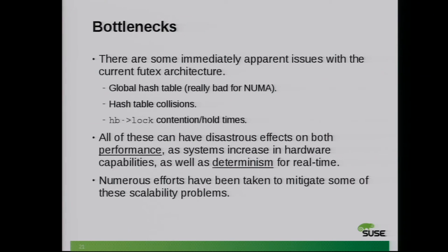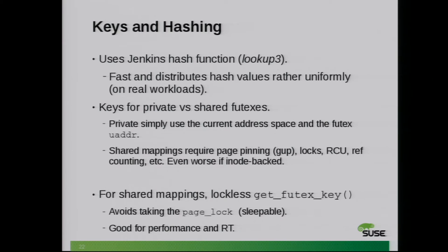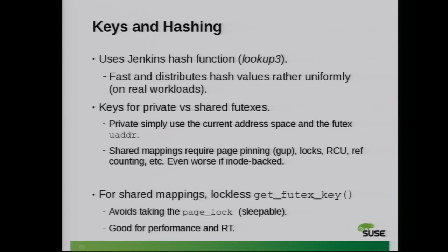Throughout maybe the past two years, there's been a lot of work addressing these bottlenecks and I'm going to show you some specific examples. Before you actually consider the priority lists, the hash table, the hash bucket lock, you have to first convert the uaddress to the key and hash to get the hash bucket. All that is done without the spin lock held, because we don't know what hash bucket we're going to use first.